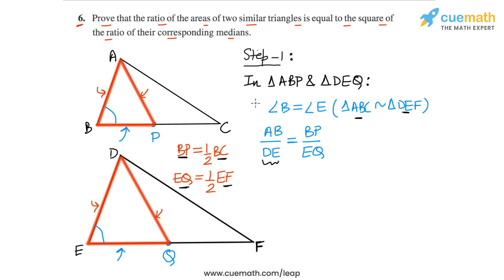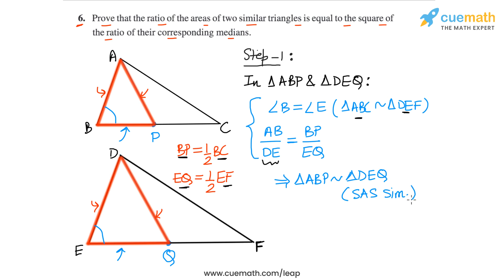So from these two things — an equal angle and the sides including the angle being proportional — we can say that the two triangles are similar. Triangle ABP is similar to triangle DEQ using the SAS similarity criterion. From here it follows that the ratio of corresponding sides of these two triangles are equal, so AP by DQ equals AB by DE. This completes step one: the ratio of medians equals the ratio of corresponding sides.